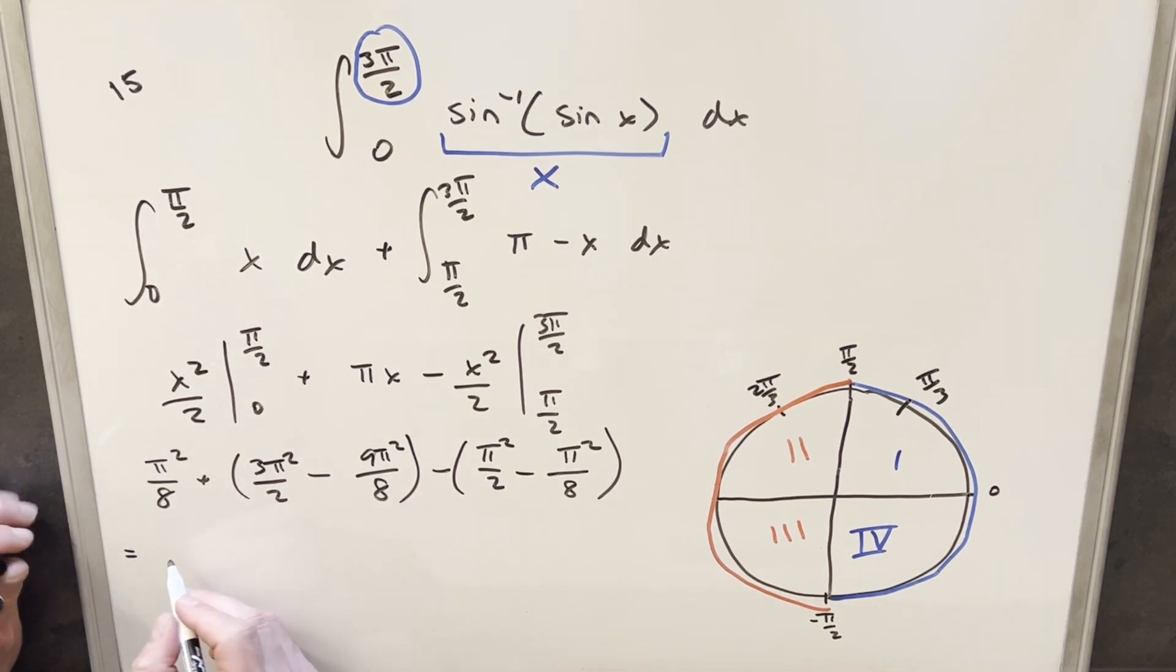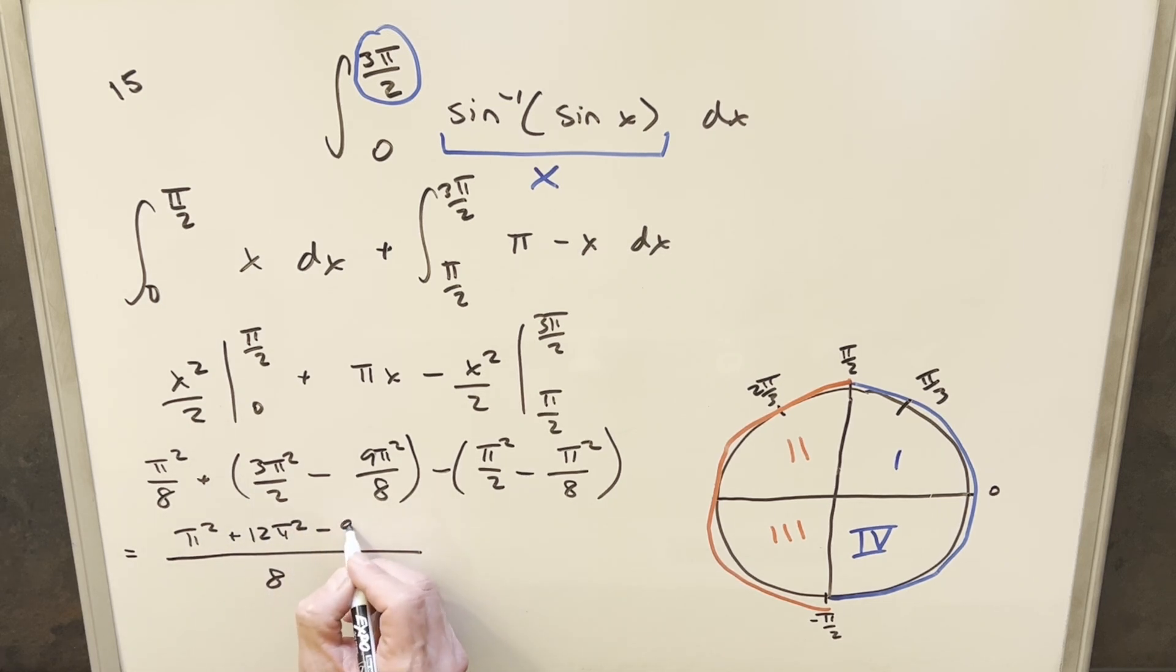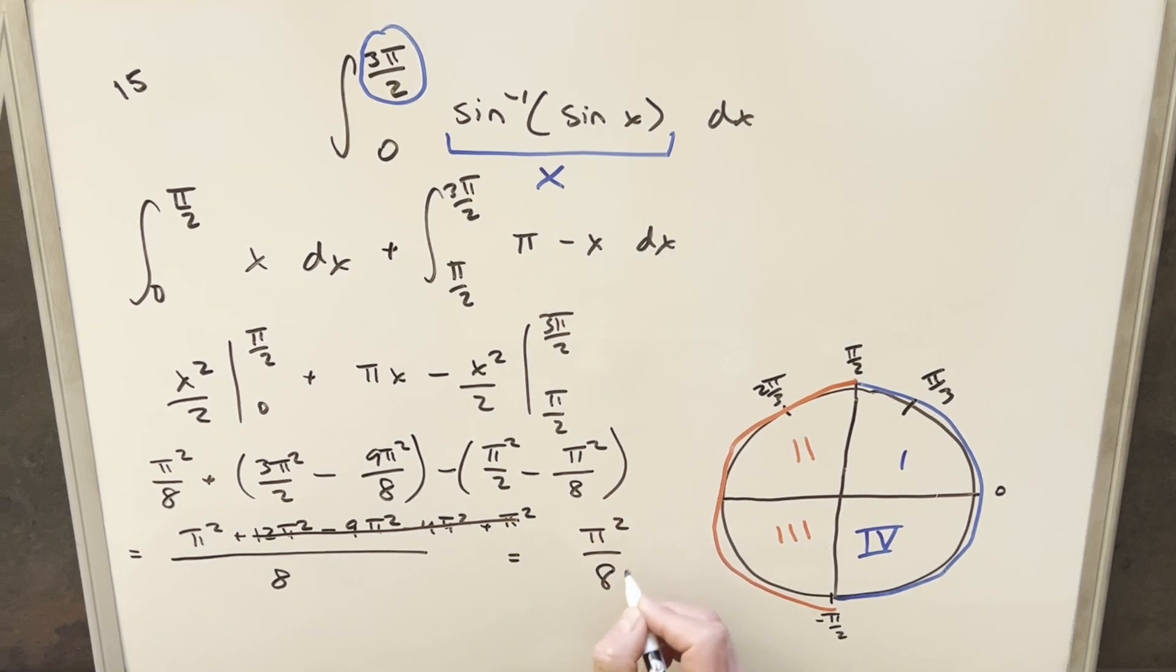So from here, I'm just going to get a common denominator. I'm going to put everything over 8 for my common denominator. So we're going to have π²/8, this one multiplying by 4 is going to become 12π²/8. This one's just going to be minus 9π²/8. This one's going to be minus 4π²/8. And this one's going to become minus times minus is plus π²/8. But then you'll notice everything here is just going to cancel out. And we're left with our final answer of just π²/8.